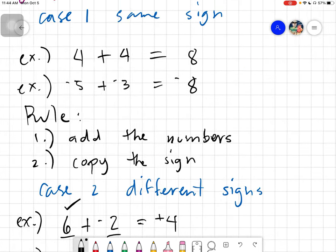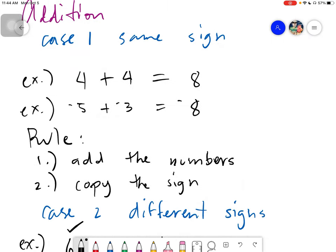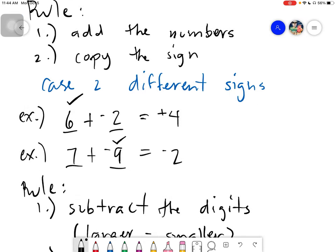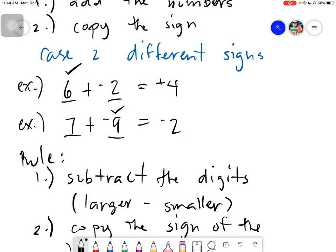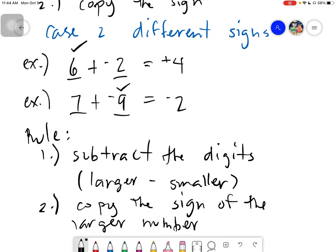Two cases again. Let's review. Case number 1, same sign. The rules are add the numbers and copy the sign. And case number 2 would be different signs. Subtract the digits and then you copy the sign of the larger number.